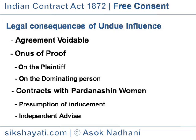Onus of Proof — On the Plaintiff: To avoid a contract on grounds of undue influence, the burden of proof lies on the plaintiff to prove that the party used his dominant position to influence the plaintiff's consent on the contract, and that the contract was unconscionable, meaning unreasonable.